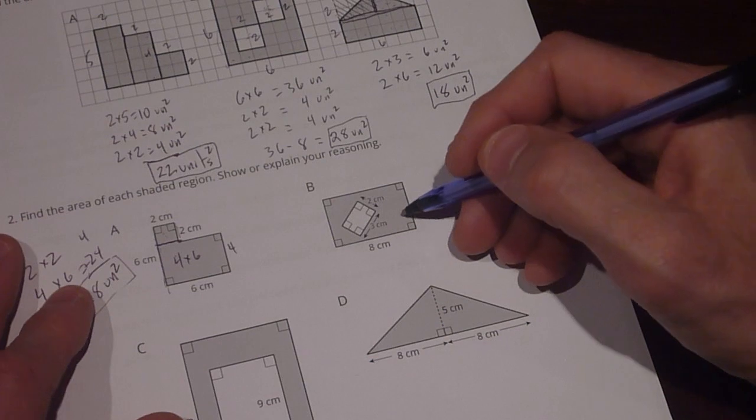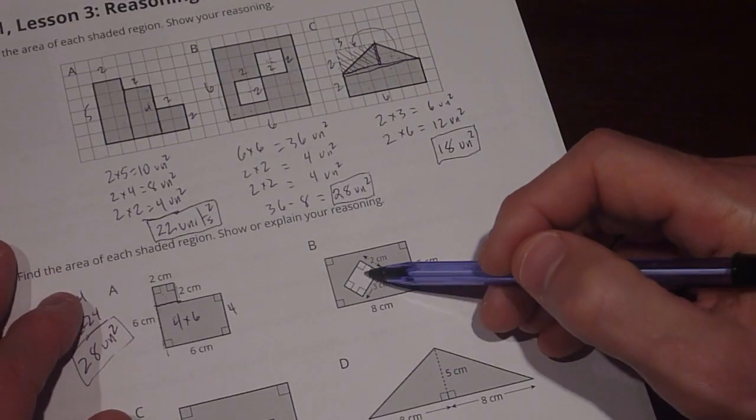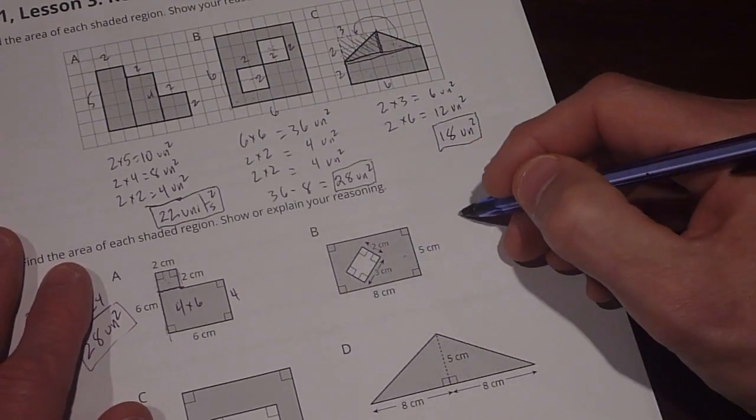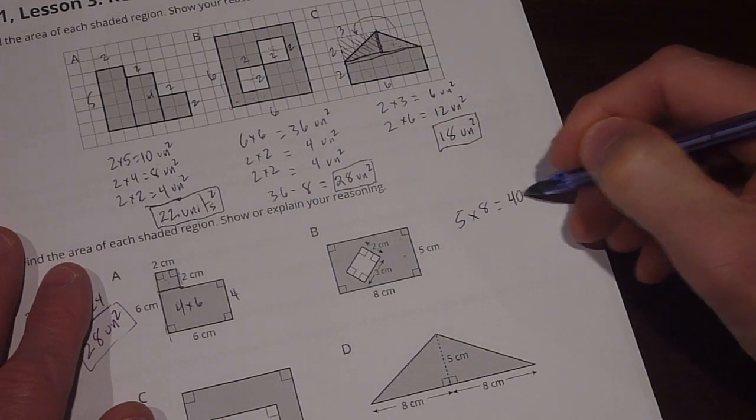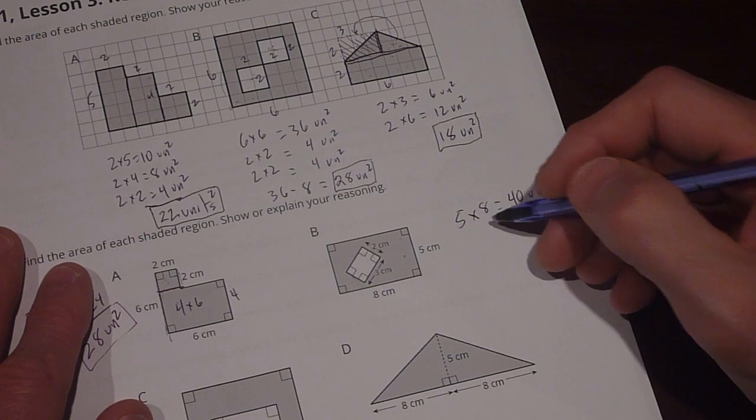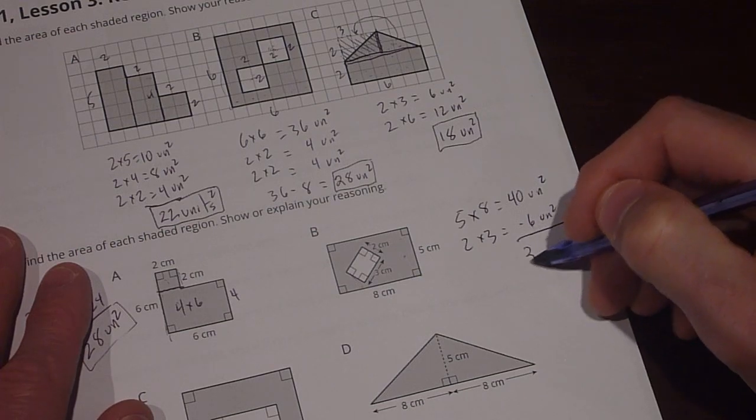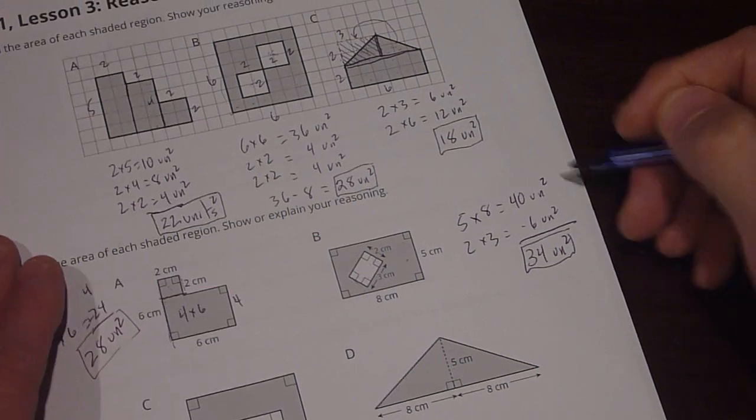Now figure B is similar to this one that we did up here, where there's an outer shape and an inner shape. We have to subtract the inner shape. So my outer shape is a 5 by 8 rectangle. And that's going to give me 40 units squared. And I'm going to subtract my inner rectangle away from that, which is 2 times 3, which is 6 units squared. I subtract those and I wind up with 34 units squared for figure B.